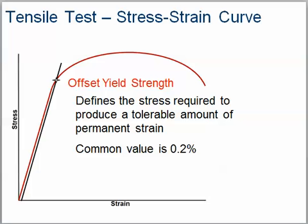Offset yield strength defines the stress required to produce a tolerable amount of permanent strain. A common value used is 0.2%.